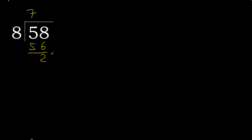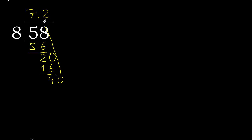That is not a whole number, therefore always complete with 0. Decimal point. Now we have 20. 8 multiplied by 3 is greater; multiply by 2: 16 is not greater. Subtract: remainder is 4. Complete — decimal point continues.